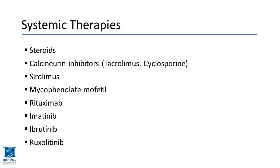Other systemic agents include sirolimus, mycophenolate mofetil (CellCept), rituximab — an anti-CD20 antibody that targets B cells involved in producing the antibodies causing GVHD — and imatinib, a tyrosine kinase inhibitor tested for sclerodermatous chronic GVHD. In terms of efficacy, all of these agents are generally similar to each other.